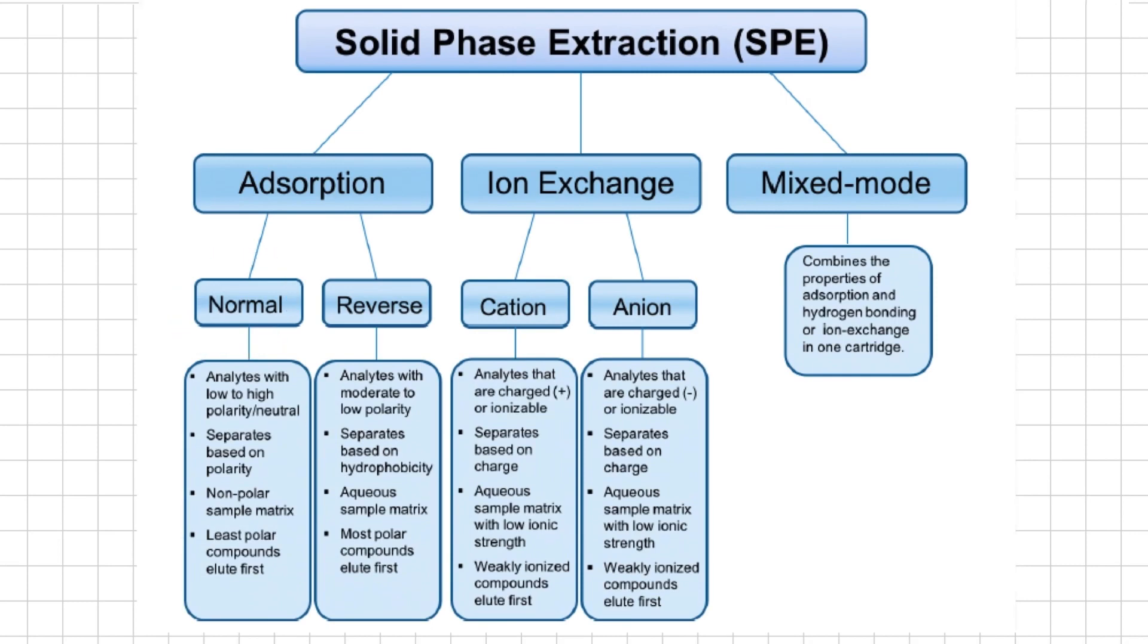Normal phase adsorption type of solid phase extraction are commonly used when the analyte of interest has low to high polarity or it's neutral. The cartridge contains a polar adsorbent such as silica, and this separation will be based on polarity with the least polar components eluting first. The sample is usually in a non-aqueous matrix. For example, a researcher wishes to determine the concentration of polycyclic aromatic hydrocarbons or PAH in coffee samples. Many PAH compounds are carcinogenic and can be introduced during the roasting process.